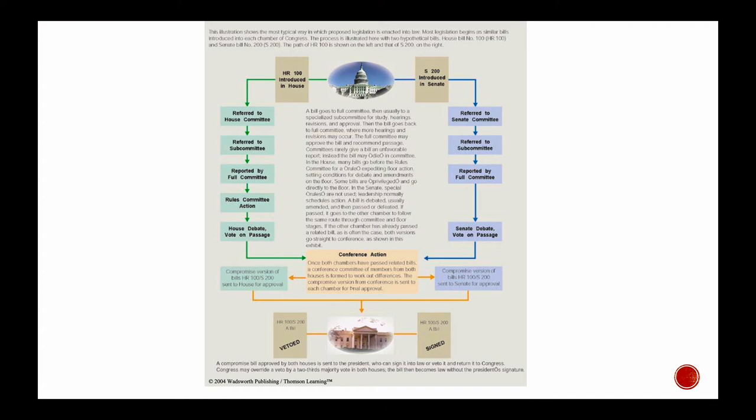There are other versions of that that could happen and guess what, the rules committee can also refuse to give a bill rules and then it can die there too. But if a bill has made it out of the rules committee then it goes to the floor and then debate happens on the floor which are those people that are talking and perhaps offering amendments perhaps not depending on the rules and then the House votes on it. Well guess what? That's awesome. It's been through the House and now it has to go through the Senate.